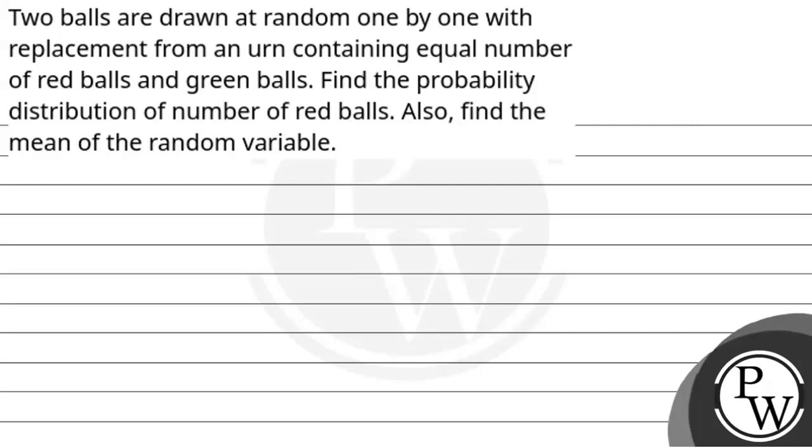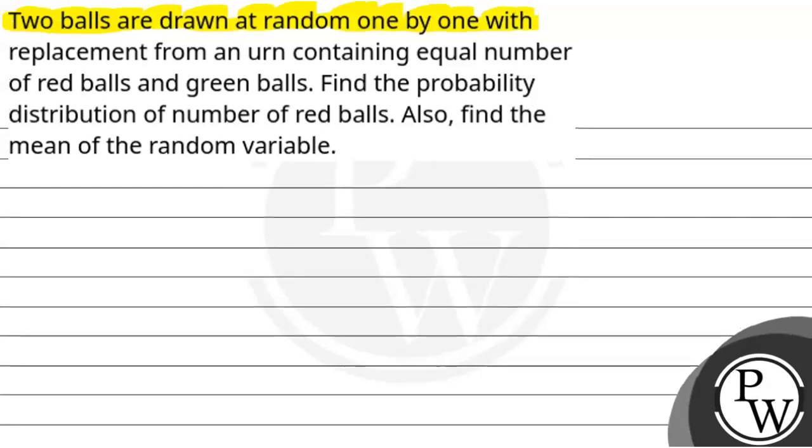Hello Bacho. Let's discuss the question. Two balls are drawn at random one by one with replacement from an urn containing equal numbers of red balls and green balls. Find the probability distribution of the number of red balls. Also find the mean of the random variable.